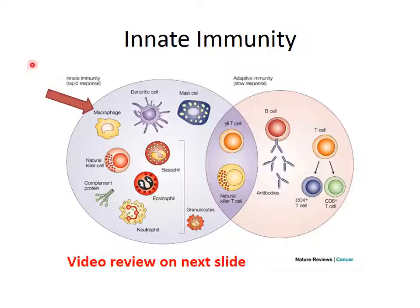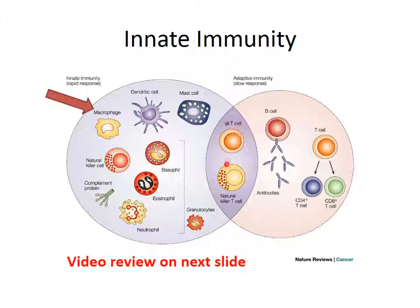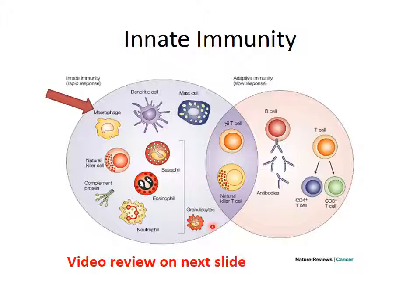Innate immunity is a rapid response — our body has cells in circulation and in tissues close to the skin, and it can send them to the site of possible infection. These cells include macrophages, mast cells, basophils, eosinophils, helper T cells, and natural killer cells. Basically, white blood cells go to an area with a possible invader and start attacking — that's the innate immune response. The adaptive immune response involves B cells and T cells, two kinds of lymphocytes. Helper T cells and natural killer cells are also involved in adaptive immunity.